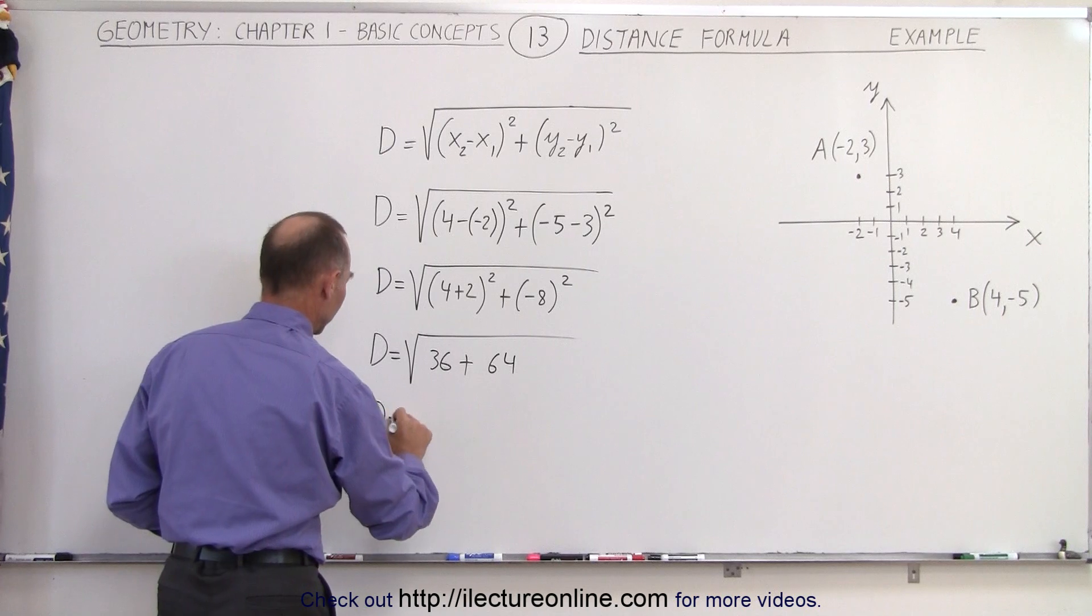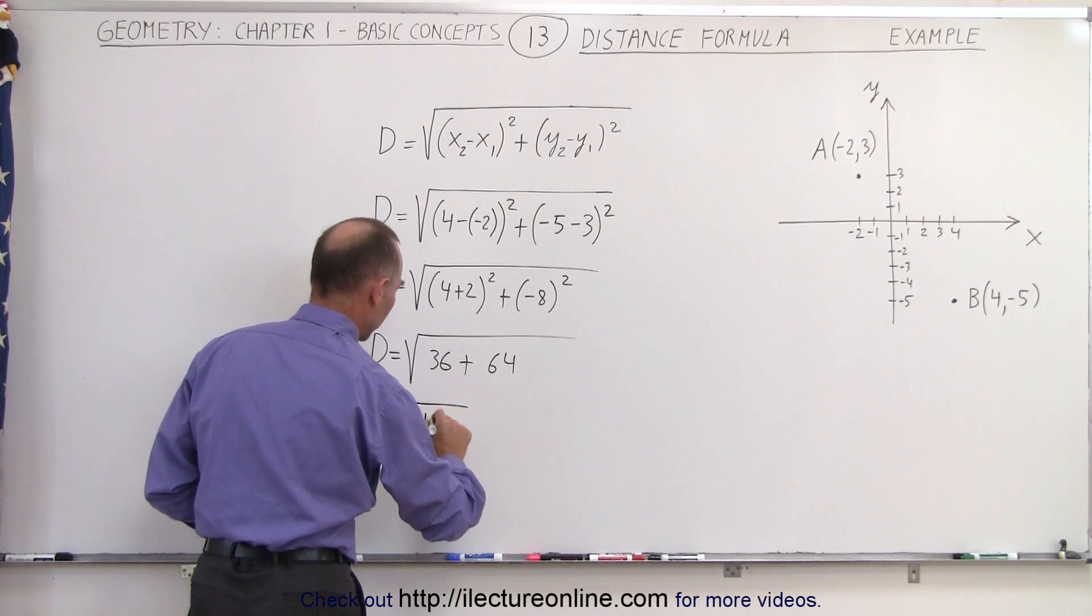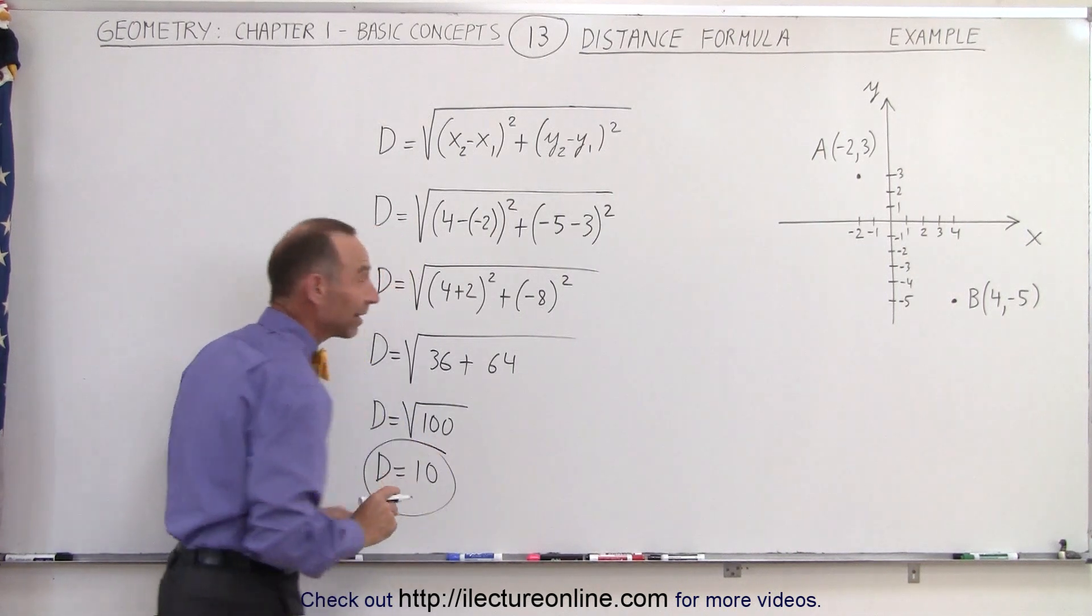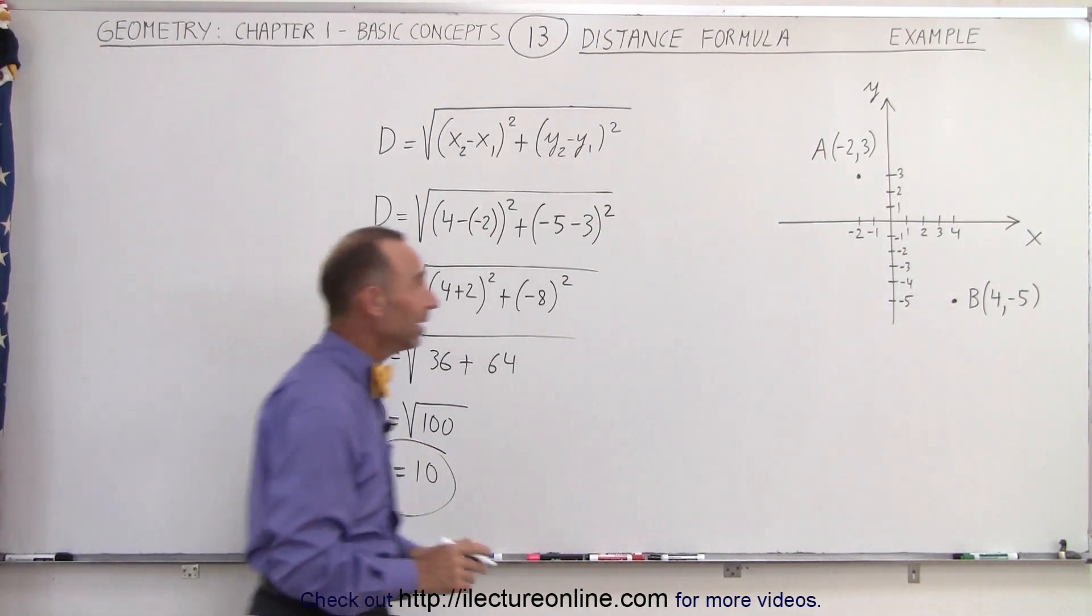So that means that the distance is equal to the square root of 100 and the square root of 100 is equal to 10. Which means that the distance between those two points is equal to 10.